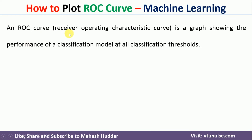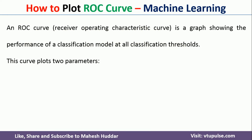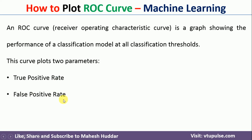ROC curve is nothing but receiver operating characteristic curve, which is used to know the performance of a classification model at different classification thresholds. To draw the ROC curve, we need to know two parameters: the first one is true positive rate and the second one is false positive rate.